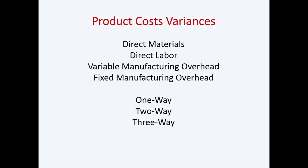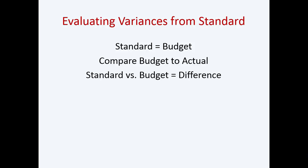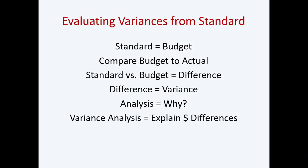You can have a one-way, two-way, three-way, four-way, or more variance analysis. We're trying to figure out all the components that went into the total variance so you can solve for any problems. Standard — think budget. You're comparing budget to actual, and that difference is called a variance. The variance analysis is the 'why' component — it explains the dollar difference.